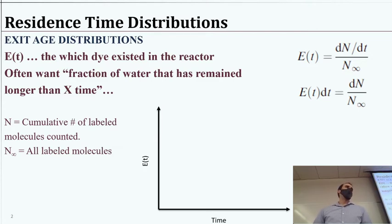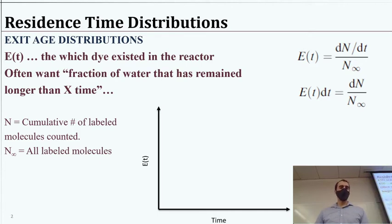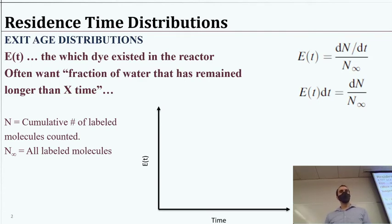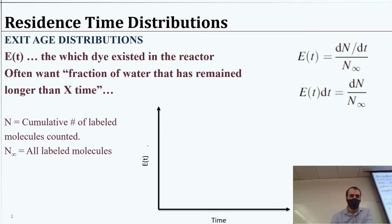A lot of times what we want is what fraction of the dye has come through the reactor after a given amount of time. How much has gone by within the first five minutes, or what fraction remains after 10 minutes? We often want some indication, given what we think is the hydraulic residence time — V over Q — how does that compare to how much has actually gone through? A typical graph of E(t) will probably look something like this: over time, we have a growth in the amount of dye coming through.